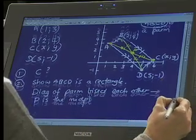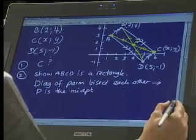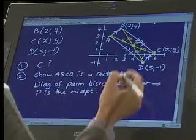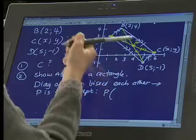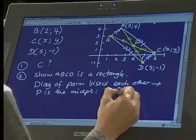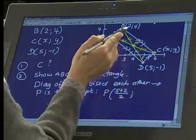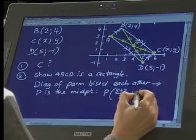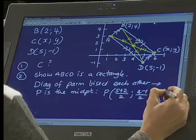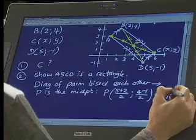I can work out what the midpoint is. I can say that P's coordinates are the sum of those two. So it's 5 plus 2 is 7 over 2 and 4 minus 1 is 3 over 2. So P is just 7 over 2 and 3 over 2. So that's the coordinates of the midpoint.